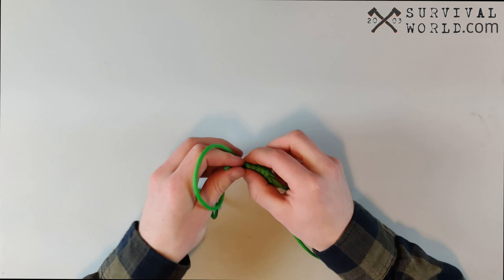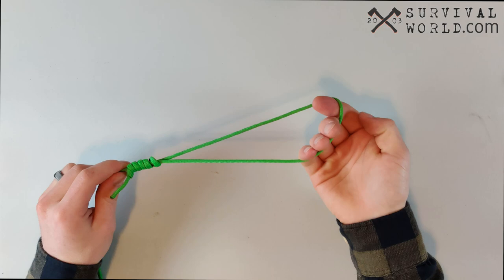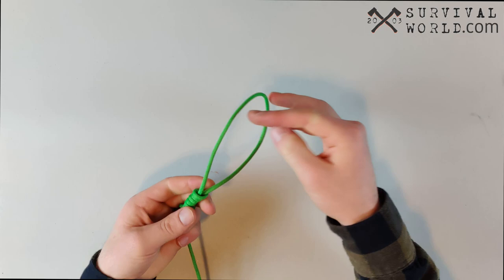Once you've went around a couple times, just take your end here, grab it through this loop, and pull your knot tight. That's how you create the hangman's knot.